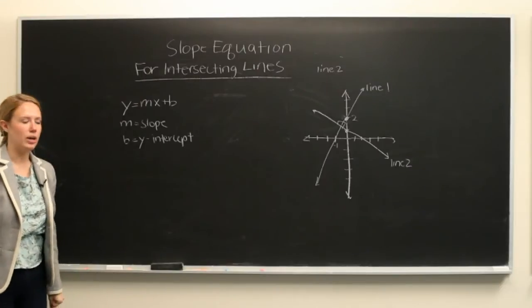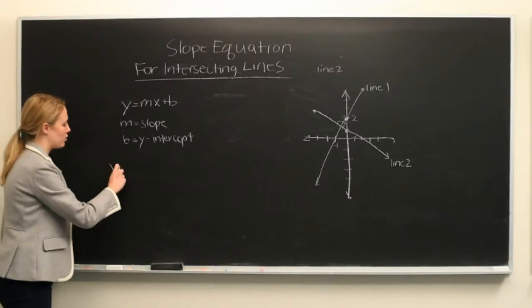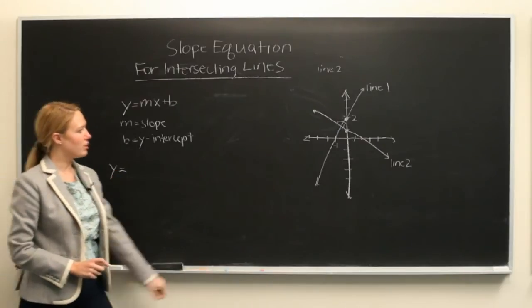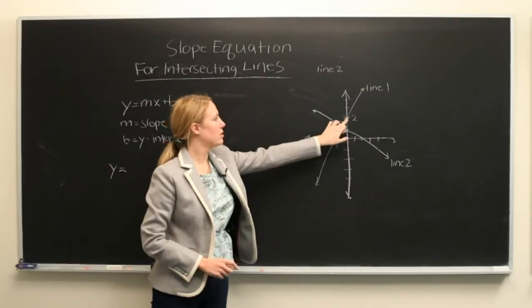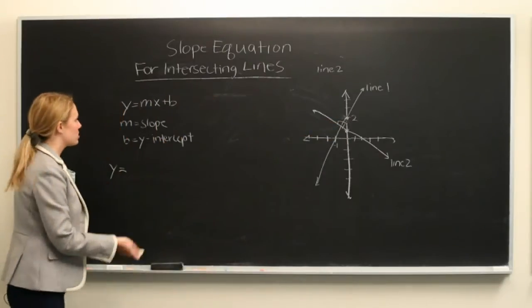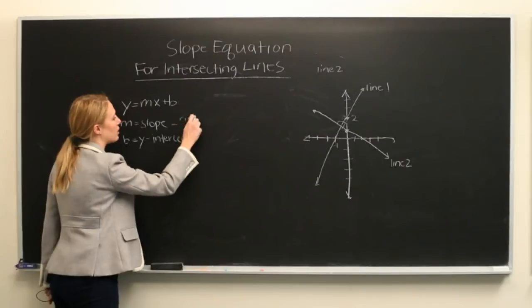For line one, we're going to write this formula and we see that the slope of line one has a rise of two and a run of one, and the slope is equal to the rise over the run,